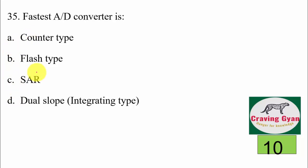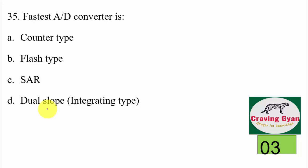35th question: the fastest A-to-D converter is — counter type, flash type, SAR, or dual slope? The fastest A-to-D converter is flash type, because it makes use of op-amps acting as comparators. Hence option B is correct.